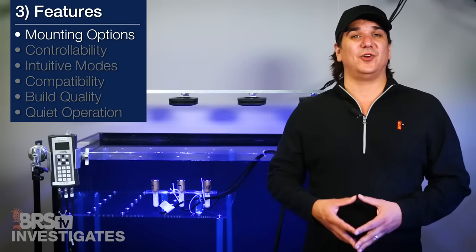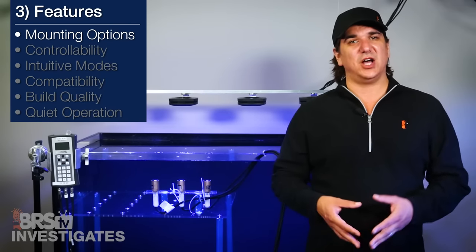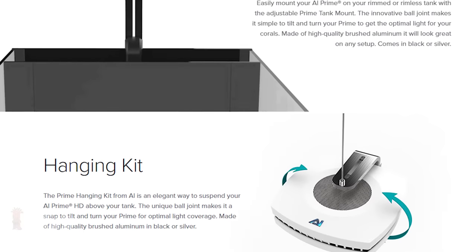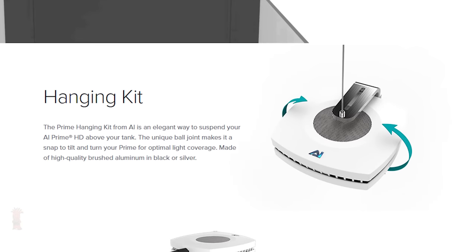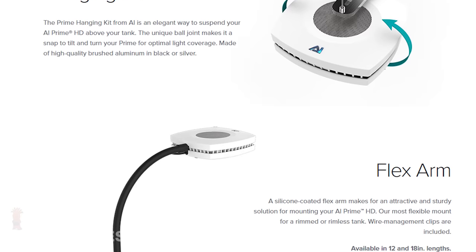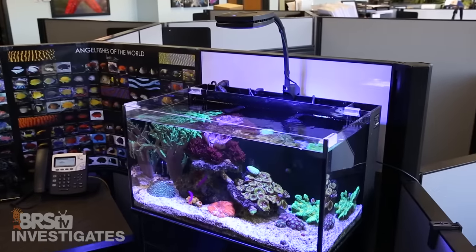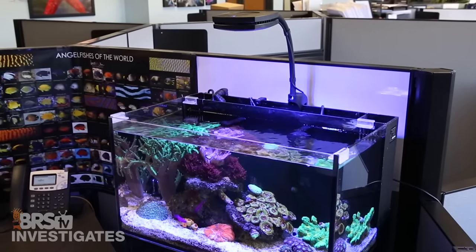Mounting options are a big one for a lot of reefers and beyond the do it yourself option I just mentioned, they have a tank mounting bracket which is super easy to use, an ultra low profile sharp looking hanging kit, as well as the easy to use flex arm in a 12 and 18 inch length. So really no shortage of easy to use mounting methods for the tank.